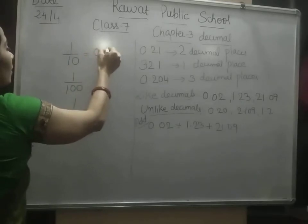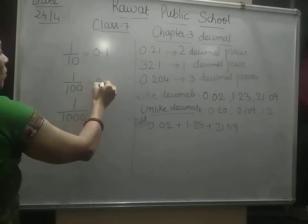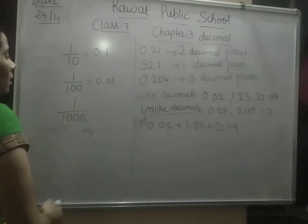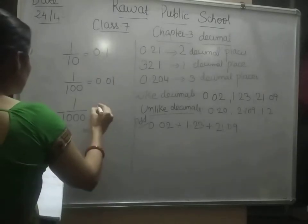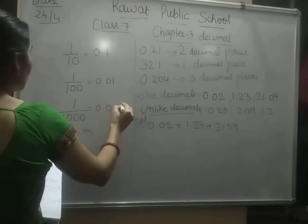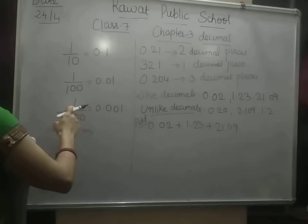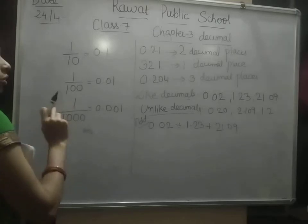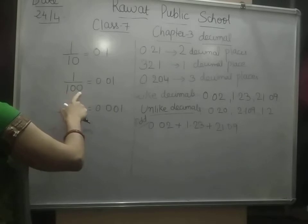1/10 is written as 0.1. And 1/100 we can write as 0.01. And what about 1/1000? That is 0.001. So 3 zeros means 1 and before that 2 zeros and a dot — meaning before 3 numbers total we have to put the decimal. Here with 100, we have 2 zeros, so before 2 numbers we put the decimal.